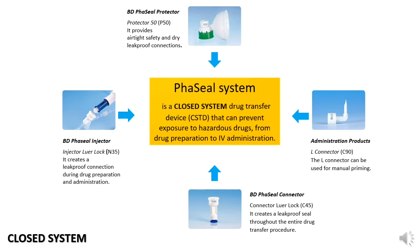These are a few examples of the facile system. The first is the Facile Protector, which provides airtight safety and dry leak-proof connections. Next, the Facile Injector creates a leak-proof connection during drug preparation and administration. The Facile Connector creates a leak-proof seal throughout the entire drug transfer procedure. Lastly, the administration product — the L-connector — can be used for manual priming.